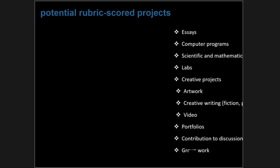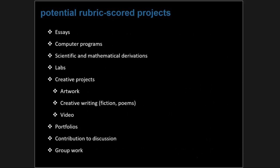What can be scored with a rubric? It's really open to your imagination. You can have essays of any complexity on any topic, computer programs, scientific or mathematical derivations or proofs, lab reports, creative projects like artwork or creative writing or video assignments, portfolios, student contributions to discussions or group work. There's really no limit to the type of interesting projects that can be rubric scored.